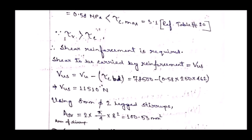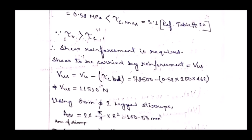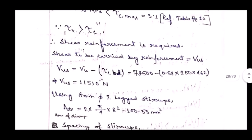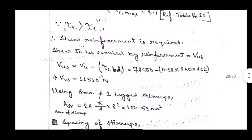The shear to be carried by reinforcement is VUS = VU − (Tau_C × B × D) = 11,510 N. Using 8 mm diameter 2-legged stirrups, the area of stirrup ASV = 2 × (π/4) × 8² = 100.53 mm².